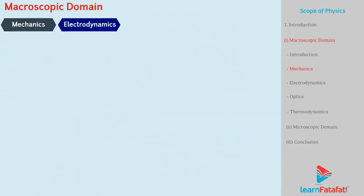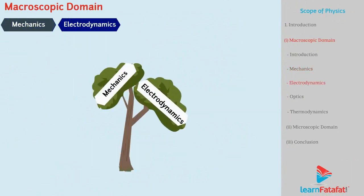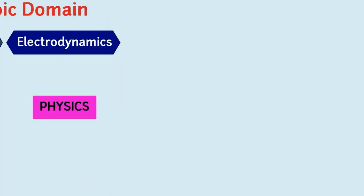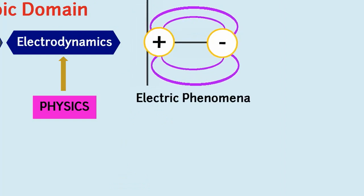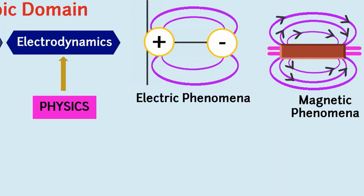Electrodynamics is a branch of physics that deals with electric and magnetic phenomena that are linked with charged and magnetic bodies.